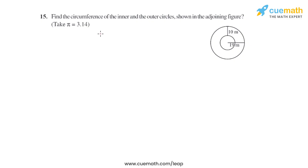Question 15 of this exercise says: find the circumference of the inner and the outer circles shown in the adjoining figure. Take pi equal to 3.14. To find the circumference, we need the radius of the inner and outer circles. The radius of the outer circle is 19 meters, as given in the question.